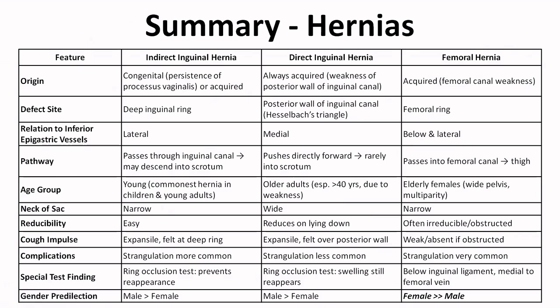Femoral hernia is usually irreducible and the cough impulse is absent. Strangulation is very common in femoral hernias. In all other hernias, males are predominantly affected. Expansile cough impulse can be present in both direct and indirect hernias. Indirect is more common in young patients whereas direct is more common in older adults, usually due to weakness of the abdominal wall. Direct can reduce on its own whereas reducibility may require manipulation in indirect hernia. Special tests include the Zieman technique, the invagination test, and the ring occlusion test.